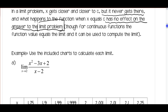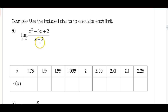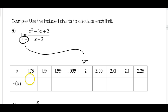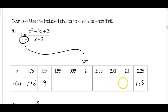Let's look at a couple of examples using the chart. When x equals C, this is undefined. Notice that the value we're approaching is in the middle of our chart, and we're looking at numbers on either side — starting a quarter away from 2 at 1.75 and 2.25, then getting closer. At 1.75 the function value is 0.75; at 2.25 it's 1.25; at 1.9 it's 0.9; at 2.1 it's 1.1.